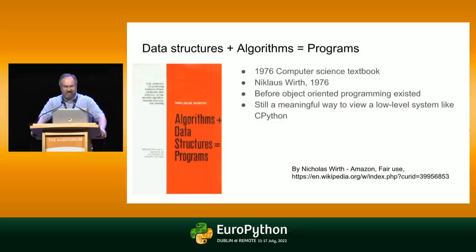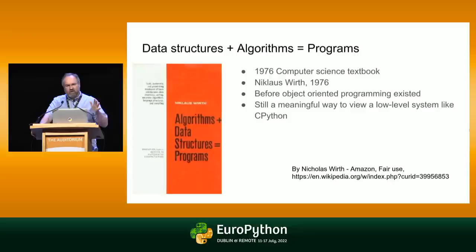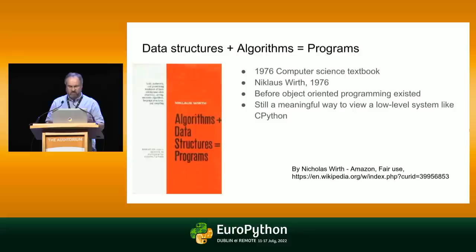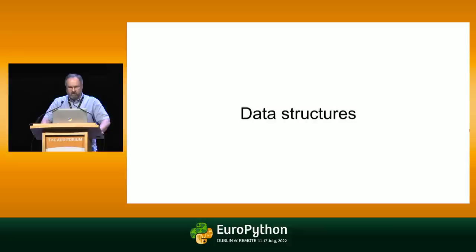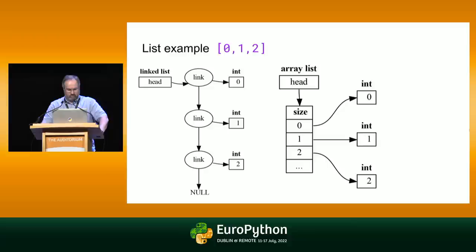Back in 1976, Niklaus Wirth was a famous computer scientist who wrote the textbook 'Algorithms plus Data Structures equals Programs.' Before object-oriented programming merged the concepts of data structures and algorithms, this was an important way of looking at programs, and it still applies to low-level system code like CPython, Linux, or Windows. So we're going to split this talk into two parts: data structures and algorithms. First, we're going to look at some data structures in CPython and how we've changed them in 3.11 for better performance.